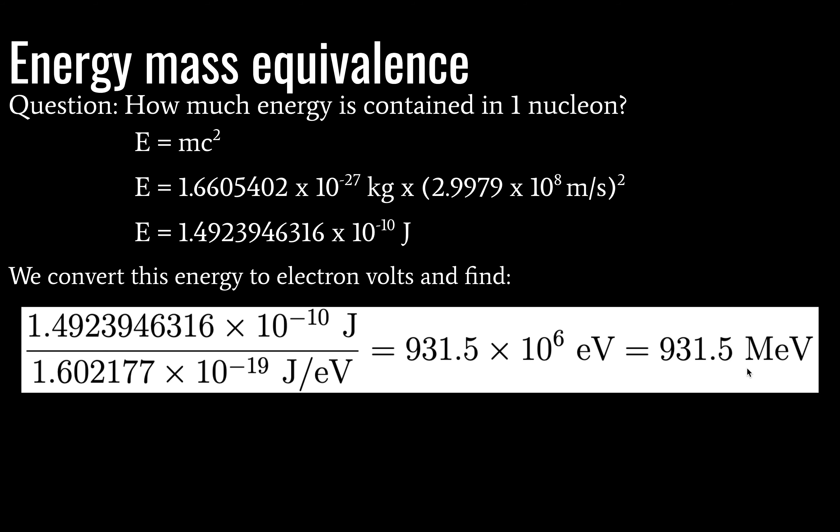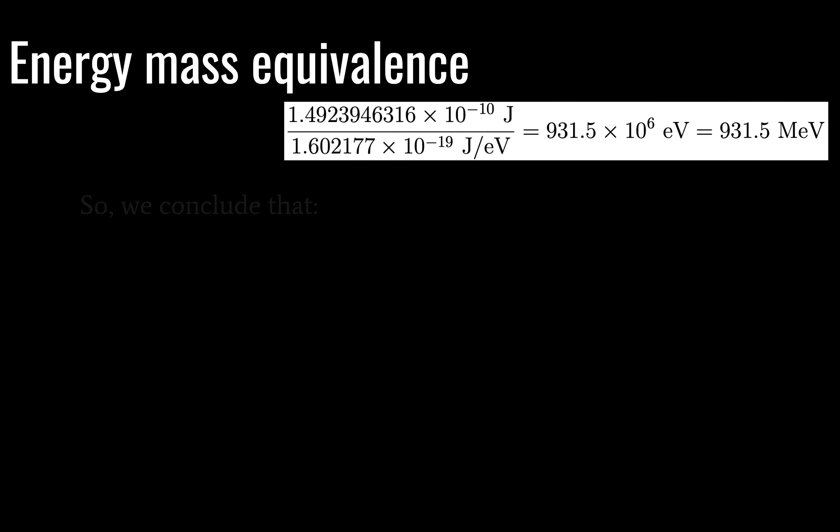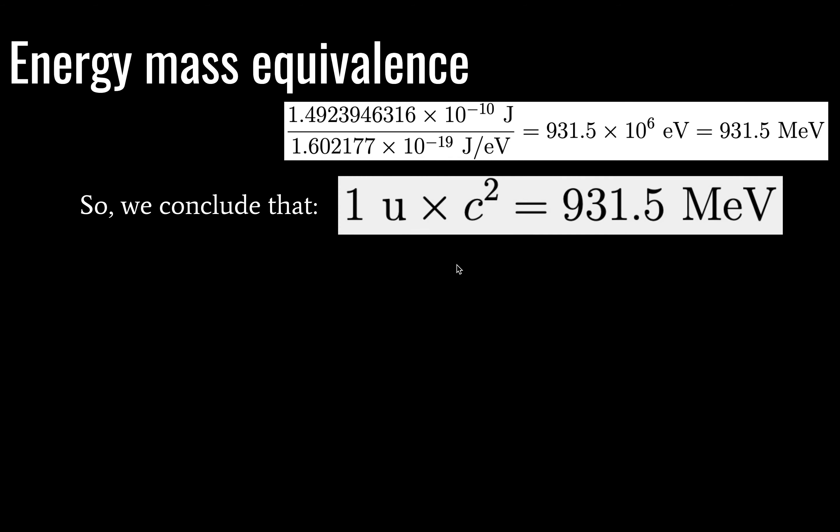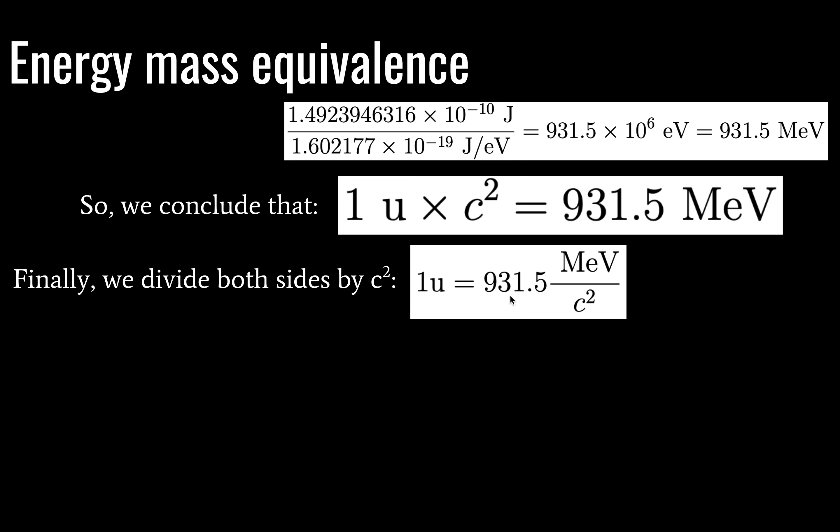We're going to take this energy and convert it to electron volts using this conversion factor, which you should recognize from topic 7.1. And this will give 931.5 times 10 to the 6 electron volts or 931.5 mega electron volts. Hold on your horses. We can conclude from this that one unified mass unit times the speed of light squared is equal to this much energy. And if we do just a little bit of algebra and divide both sides by the speed of light squared, what we're going to have then is 931.5 mega electron volts per the speed of light squared.